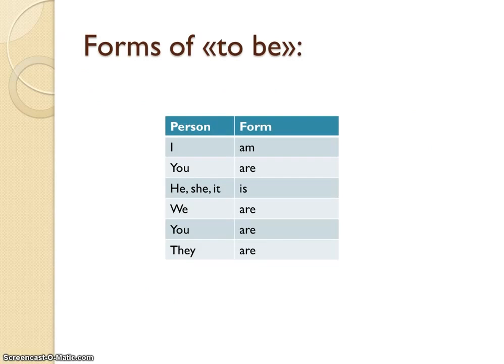Here you can see a table of the forms of to be in simple present. Memorize this table — that means learn it by heart. The forms of to be are: I am, you are, he is, she is, it is, we are, you are, they are.